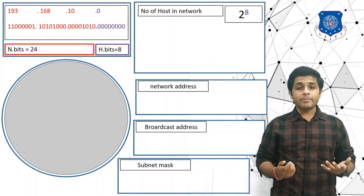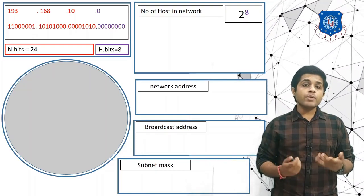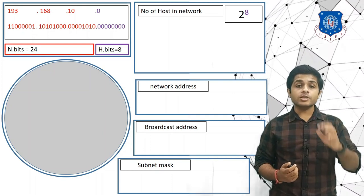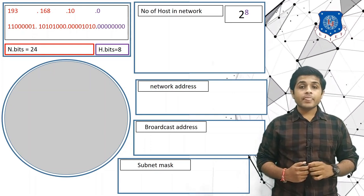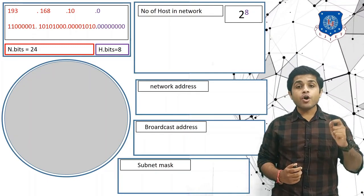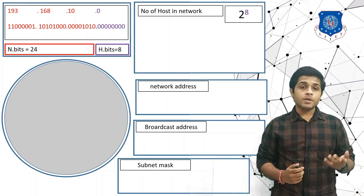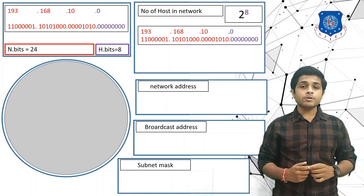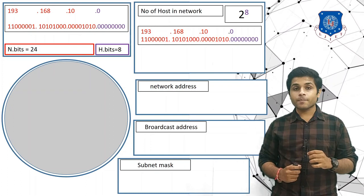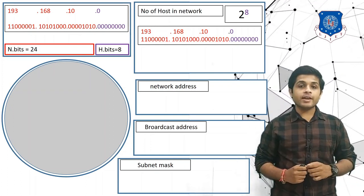To find the first IP address of this network, we set all the host bits to 0, and we get 193.168.10.0. This is the first IP address of the given network.